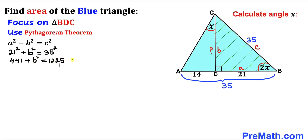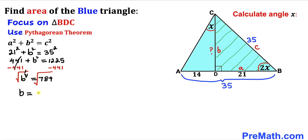Subtracting 441 from both sides gives b² = 784. Taking the square root of both sides, b equals 28 units. Therefore side length CD turns out to be 28 units.